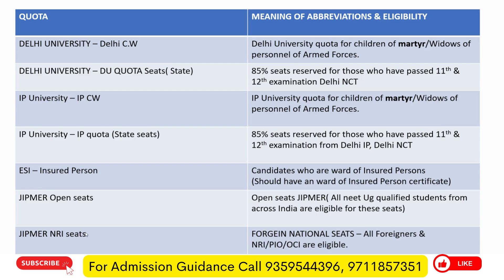IPD — ESIC Insured Person quota. Candidates who are the ward of an insured person should — please mark this carefully — must have a ward of insured person certificate. That certificate is very important if you want to apply in this quota. JIPMER Open seats — anybody from across India who is qualified can apply. JIPMER NRI seats — these are named as JIPMER foreign national seats. All foreigners, NRI, PIO, and OCI will be eligible for these seats. We'll take a two-second pause so you can take a screenshot.